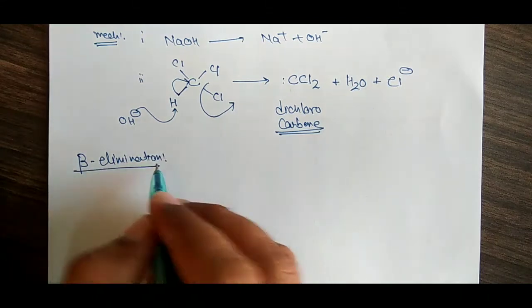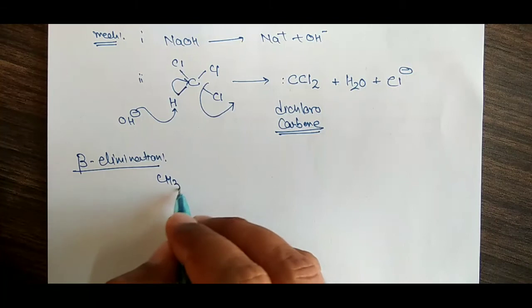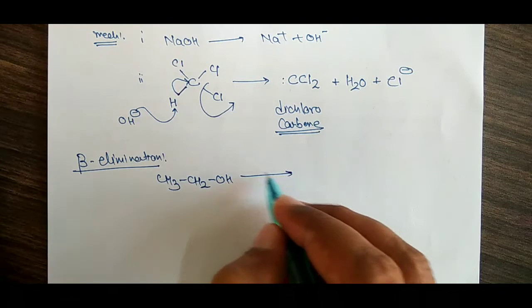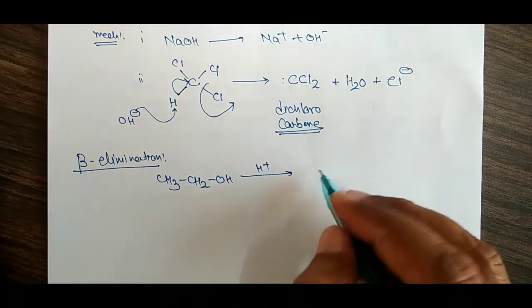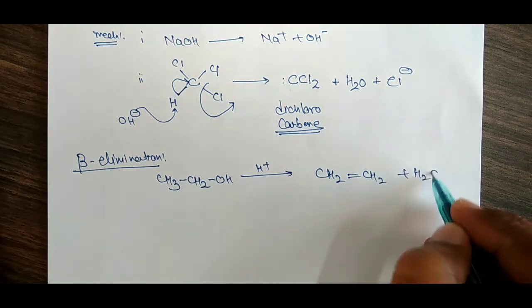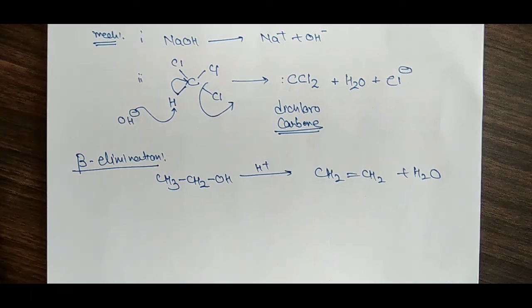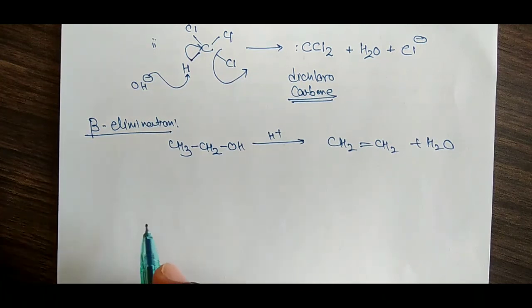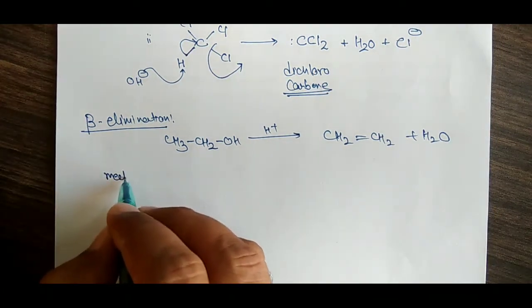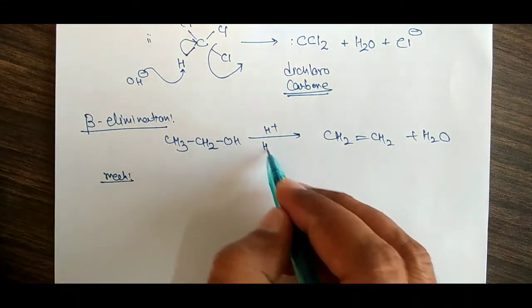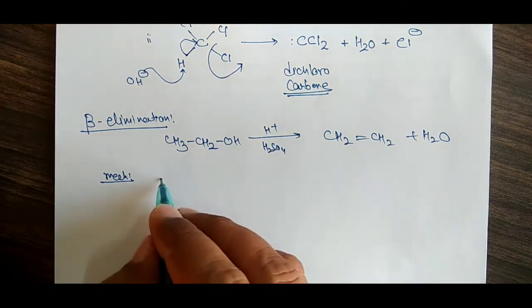Next we have the beta elimination reaction. What is the beta elimination reaction? A very good example is that we have here CH2CH2OH, and if the proton is added, we will get here CH2 double bond CH2 with loss of water. This is the type of the beta elimination reaction. Let us study the mechanism of this reaction.